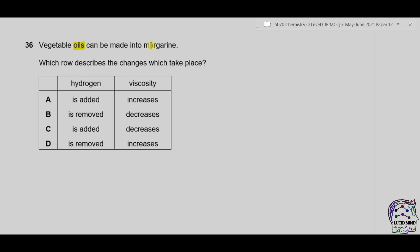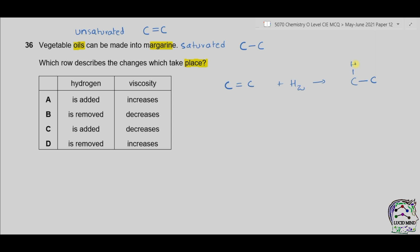Question 36. Vegetable oils can be made into margarine. Vegetable oils are unsaturated hydrocarbons containing carbon–carbon double bonds. These are converted into margarine, which is saturated and solid, containing carbon–carbon single bonds. Unsaturated hydrocarbons are converted into saturated hydrocarbons by hydrogenation — hydrogen attaches to the double-bonded carbon atoms, converting the double bond into a single covalent bond. As margarine is solid and oils are liquid, the viscosity increases. The correct option is part A.